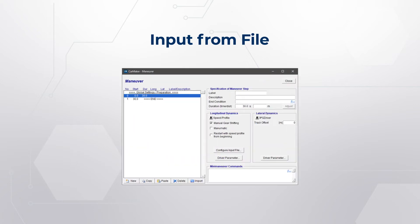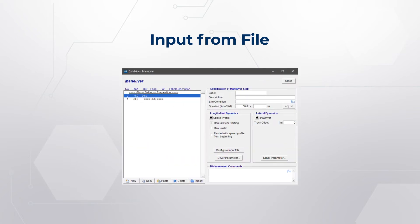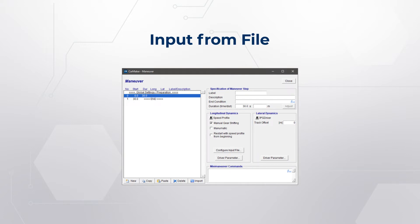To use Input from File, you need to select the speed profile for the longitudinal dynamics in the maneuver GUI, as shown in this slide. Once you select the speed profile and click on 'Configure Input from File', you get this GUI.